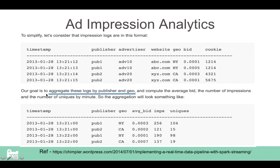The input impression format includes: timestamp, publisher, advertiser, website, geography, current bid price, and user identifier. In the real-time layer, the goal is to aggregate these logs by publisher and geography. Since impression logs can arrive at an extremely high rate, you reduce them in the real-time layer. Every five seconds, you compute the average bid, number of impressions, and number of unique visitors per publisher and geography combination.